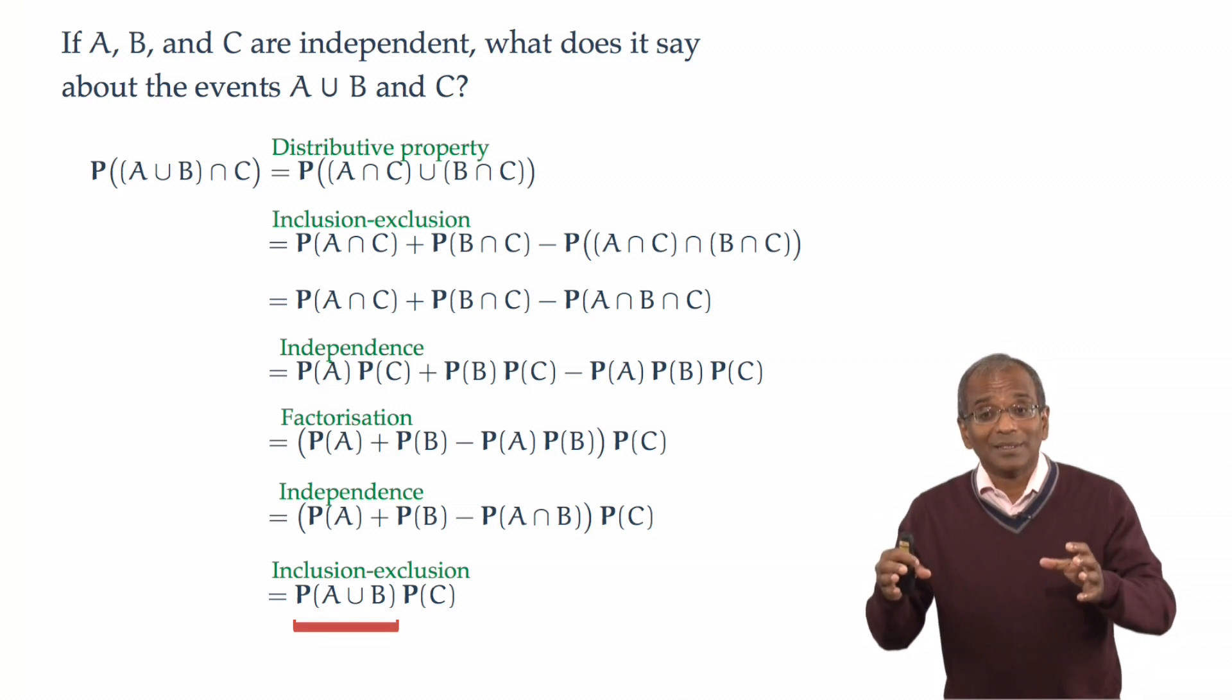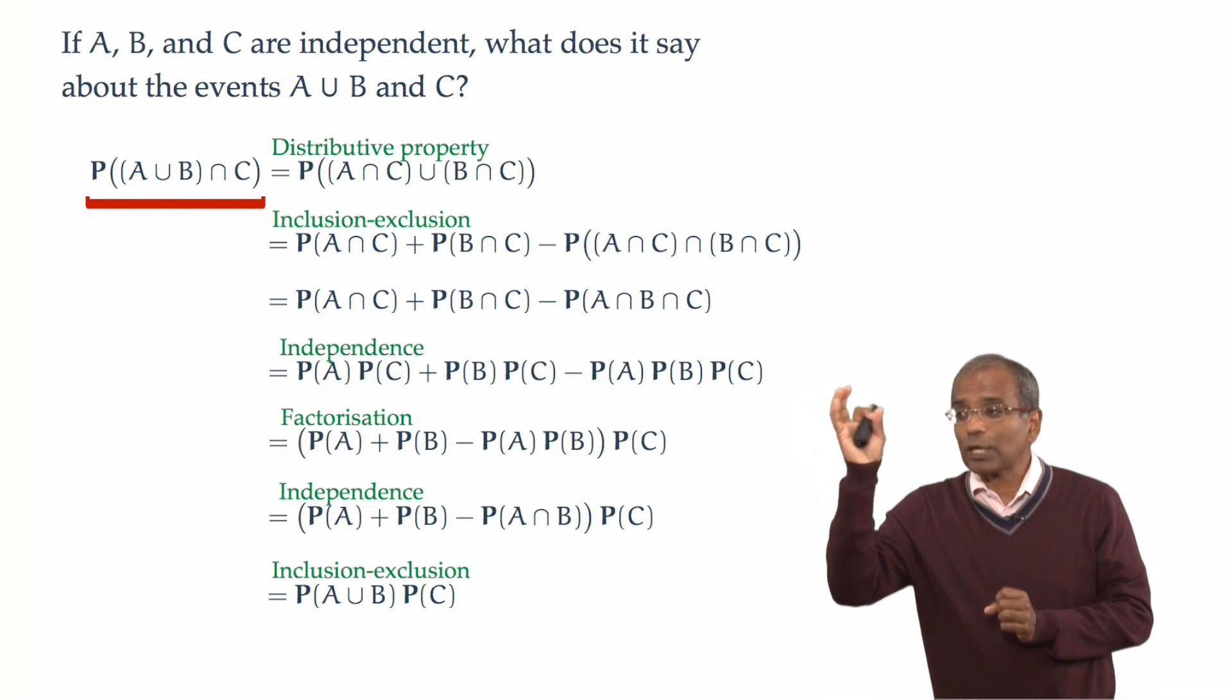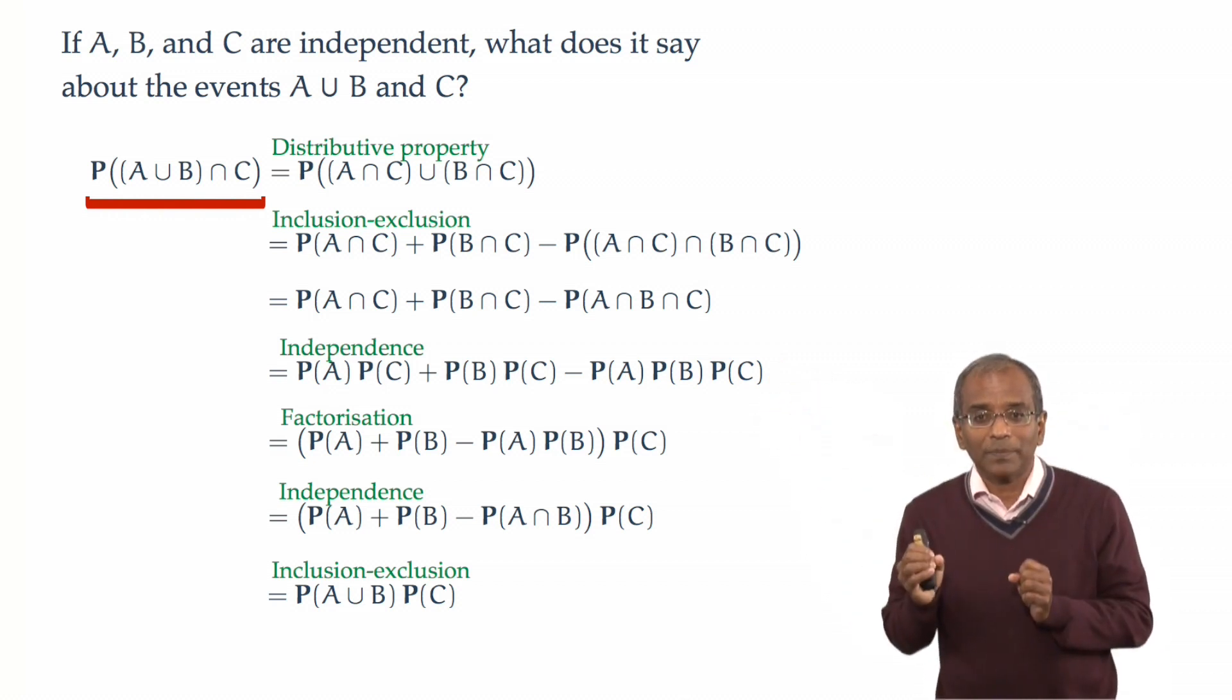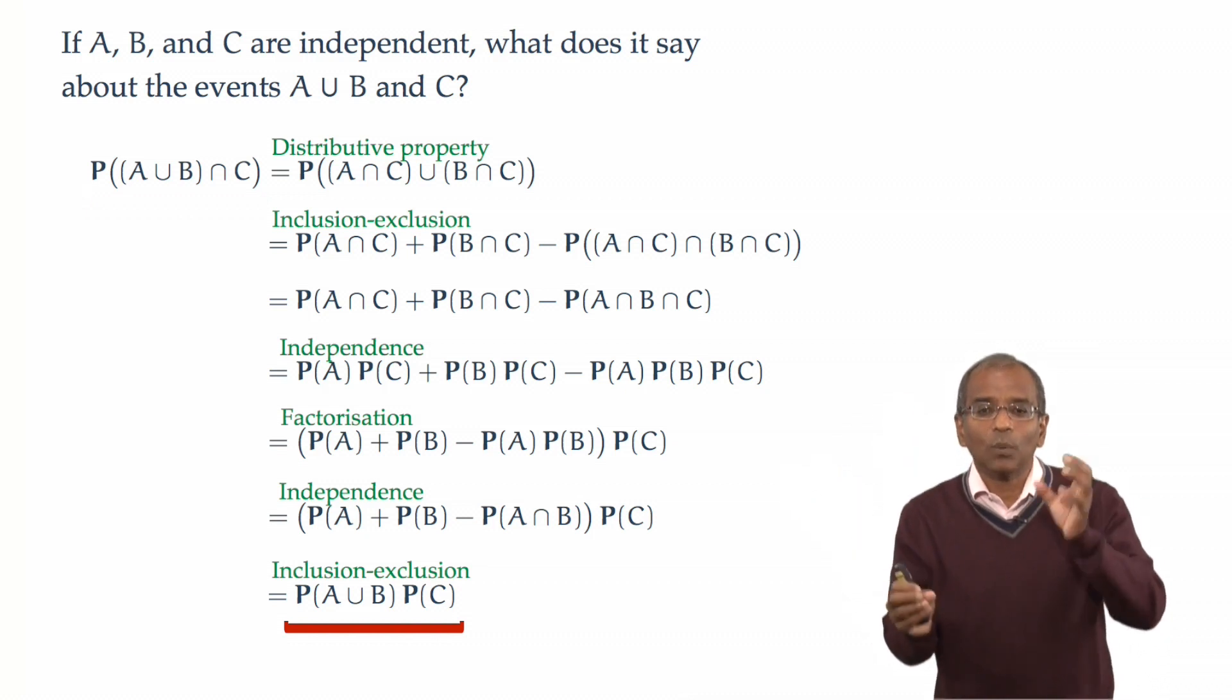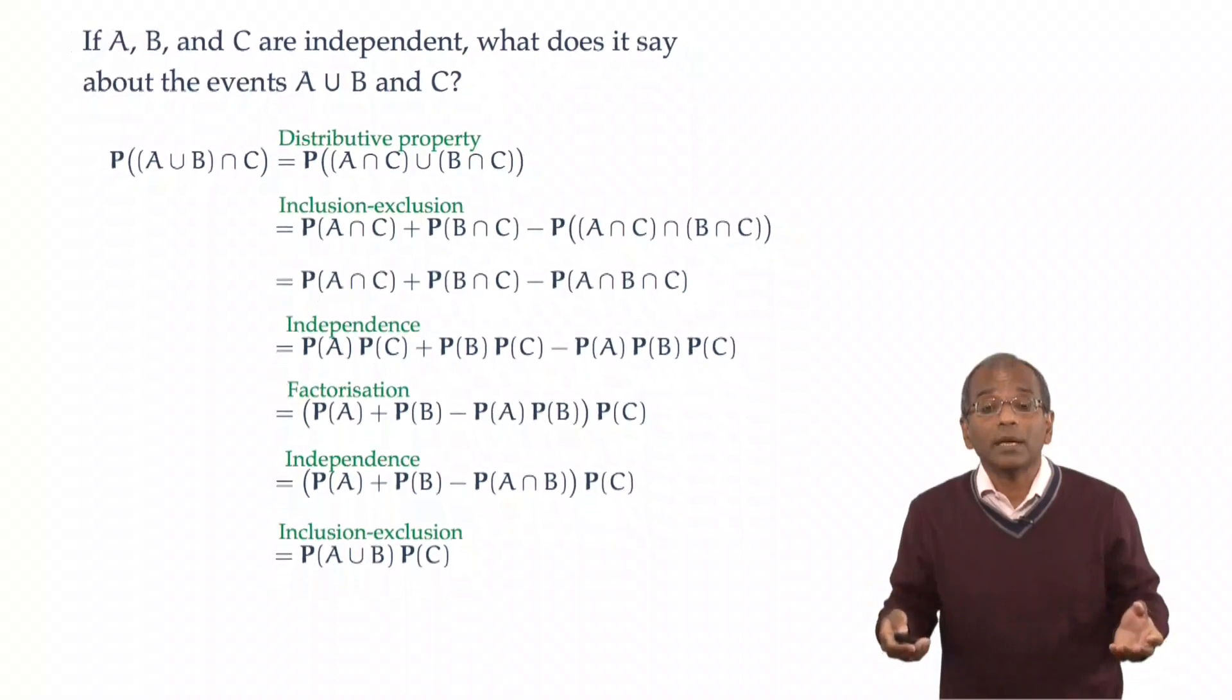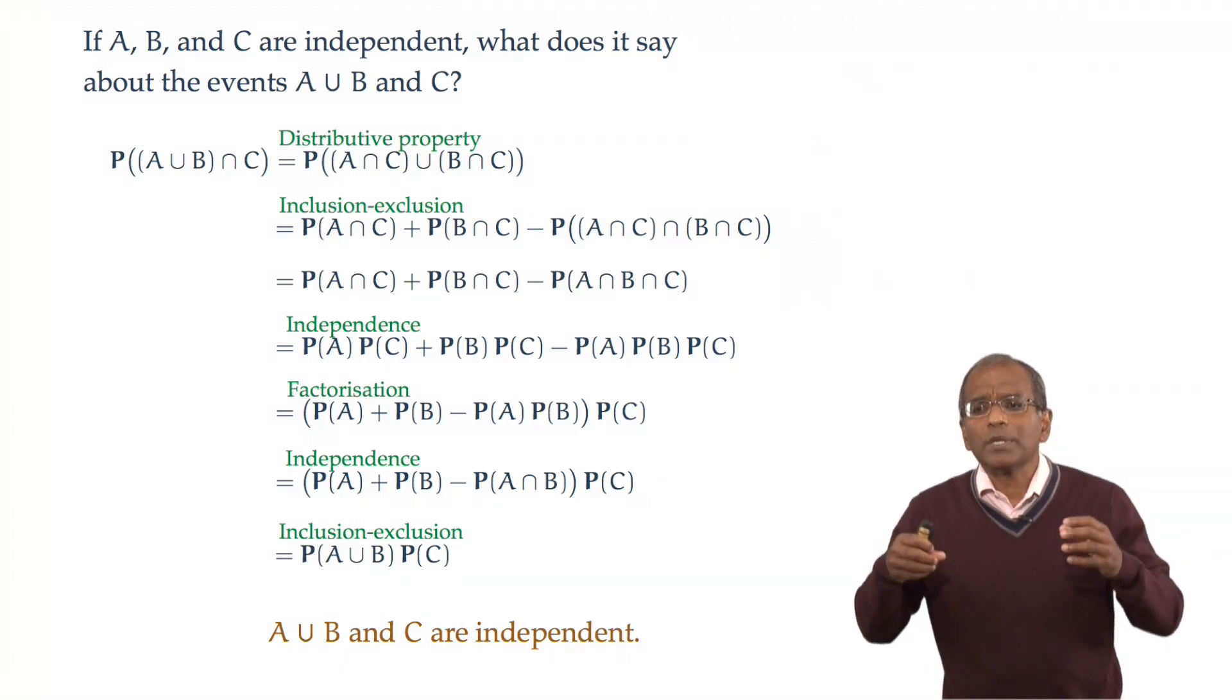Now we are done. Take a look at the left. You have the intersection of two events, a composite event with C. On the right, you have a product of probabilities, that of the composite event with the probability of C. We conclude inevitably that A union B is independent of C. And this argument now works beautifully and generally.